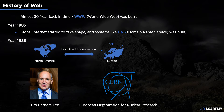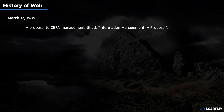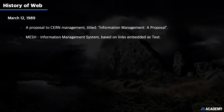Tim Berners-Lee started talking about a web-like system. Imagine working at a research center with many computers and no central system — to find a file you'd need to search each computer individually. He was frustrated by this inefficiency of finding information spread across different computers and locations. On March 12th, 1989, he sent a proposal to CERN management for a system called 'mesh.'